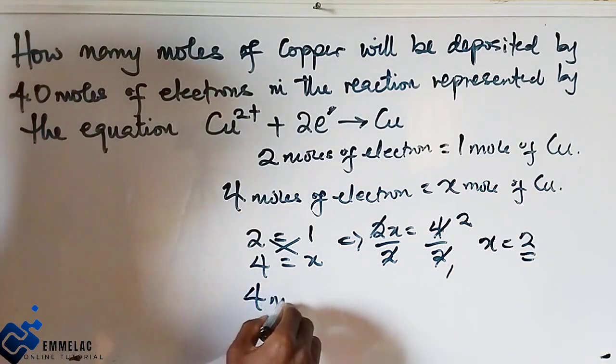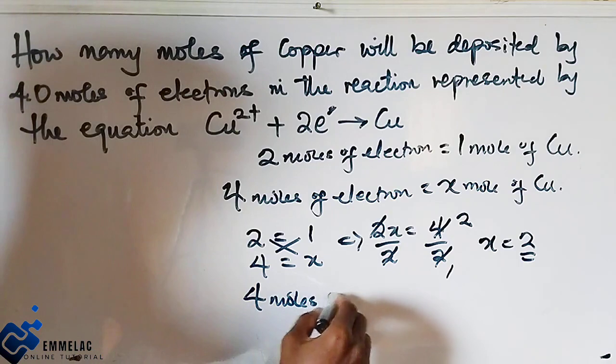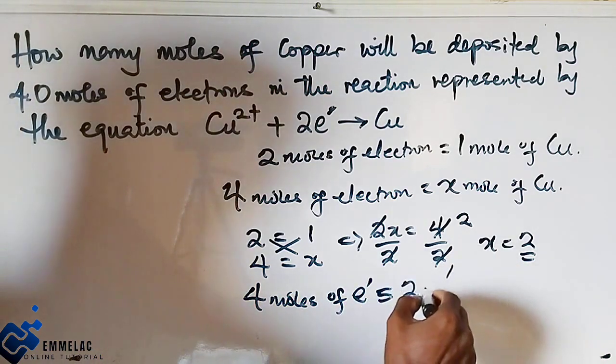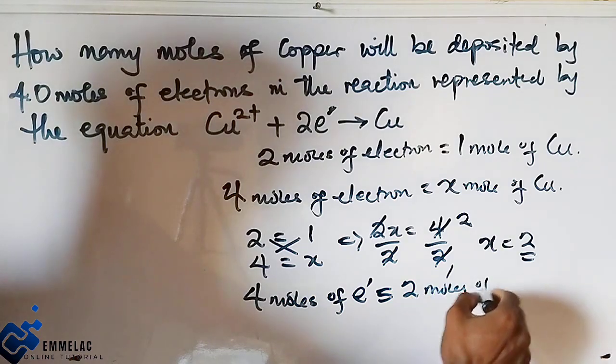So which means four moles of electron will deposit two moles of copper.